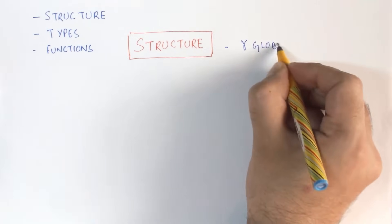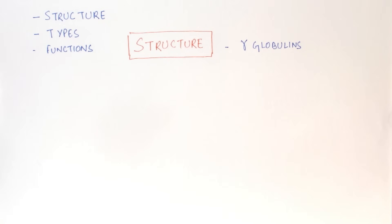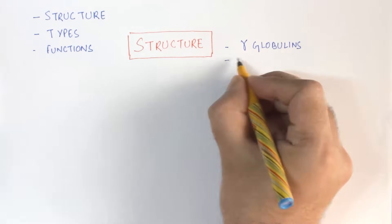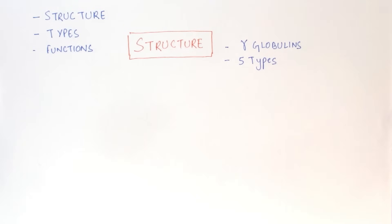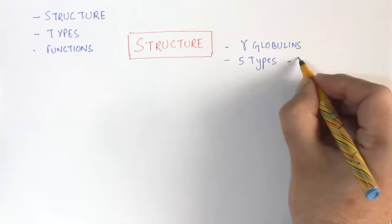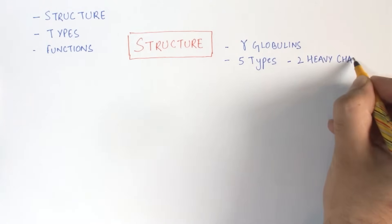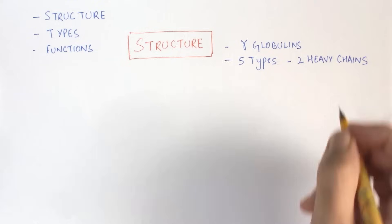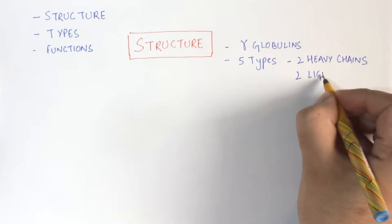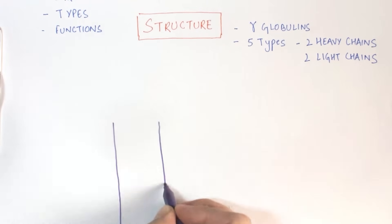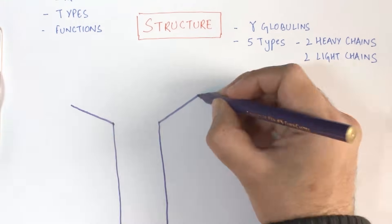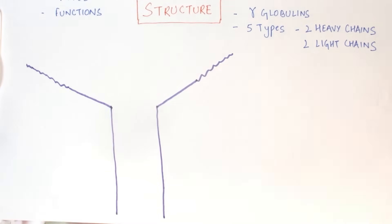Antibodies are the gamma type of globulins and there are basically five types of antibodies, but each of them contains two heavy chains and two light chains. Let me draw a diagram of the antibody which will help us understand the structure of the antibody.